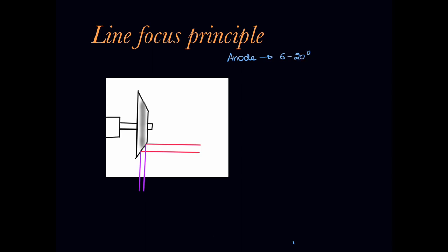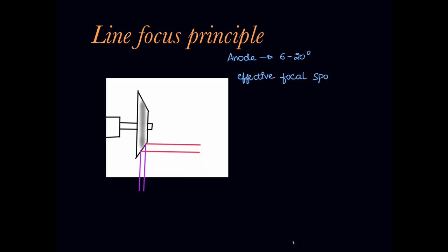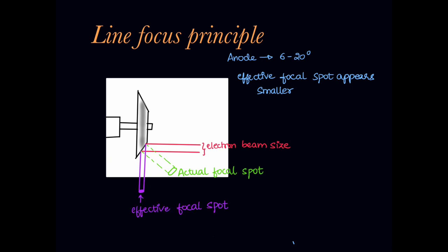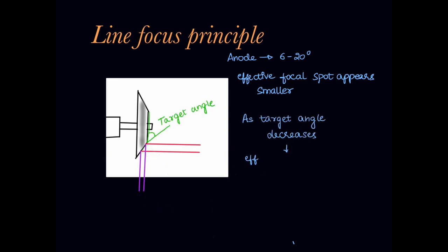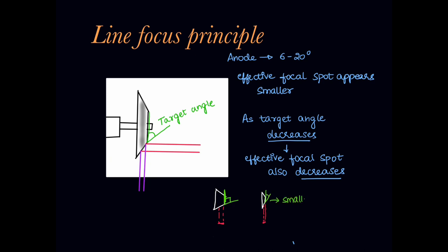In this video, we will discuss the principles on which the x-ray tube operates. The anode, usually the rotating anode, is kept at an angle of 6 to 20 degrees, also called the target angle, in order to focus the primary beam towards the patient. The electron hits the target at a focal spot, but when visualized from the angle of the patient, the effective spot will be smaller than the actual focal spot. This principle is called the line focus principle. As the target angle decreases from 20 degrees to 6 degrees, the effective focal spot size also decreases — the smaller the angle, the smaller the effective focal spot.